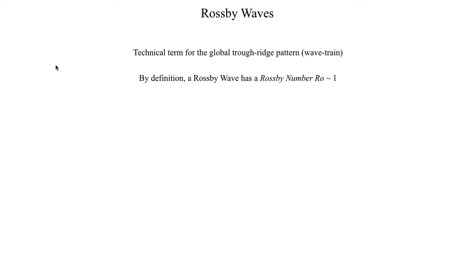Typically the definition of a Rossby wave is it's a trough or ridge with a Rossby number on the order of one. So you may remember from the previous segment when we defined Rossby number — if we plug in our characteristic values of U, F, and L, and that Rossby number comes out to be approximately one, and those values of U, F, and L point to a wave in the atmosphere, then we can call that a Rossby wave.